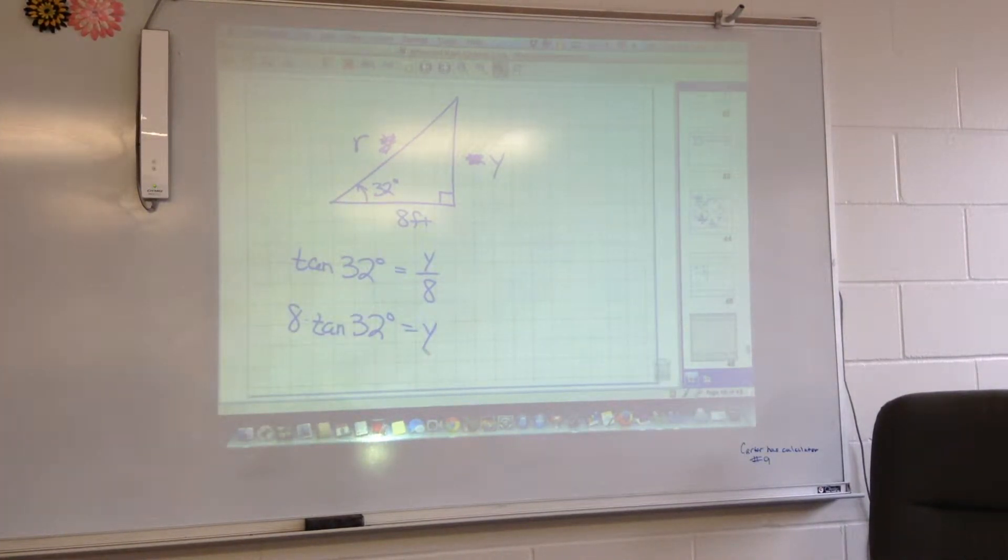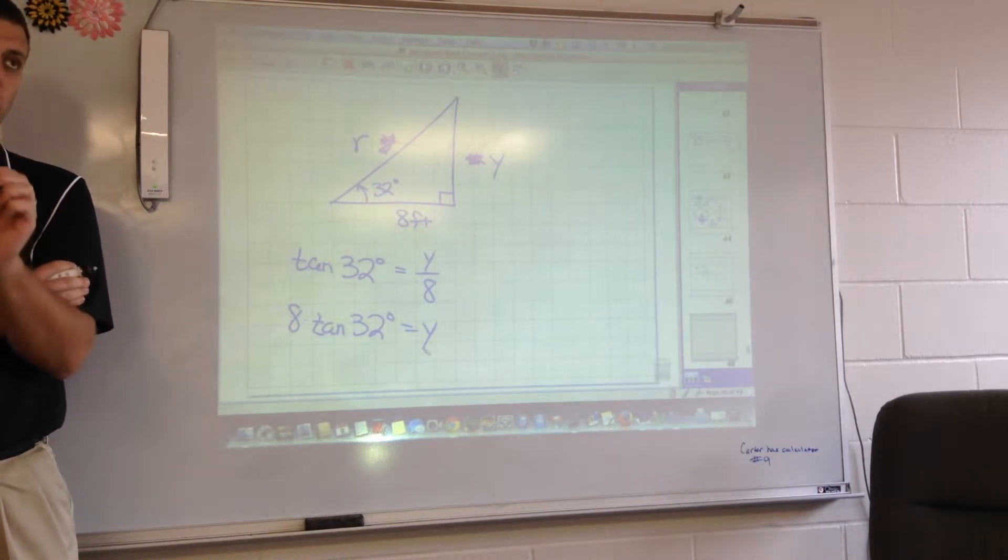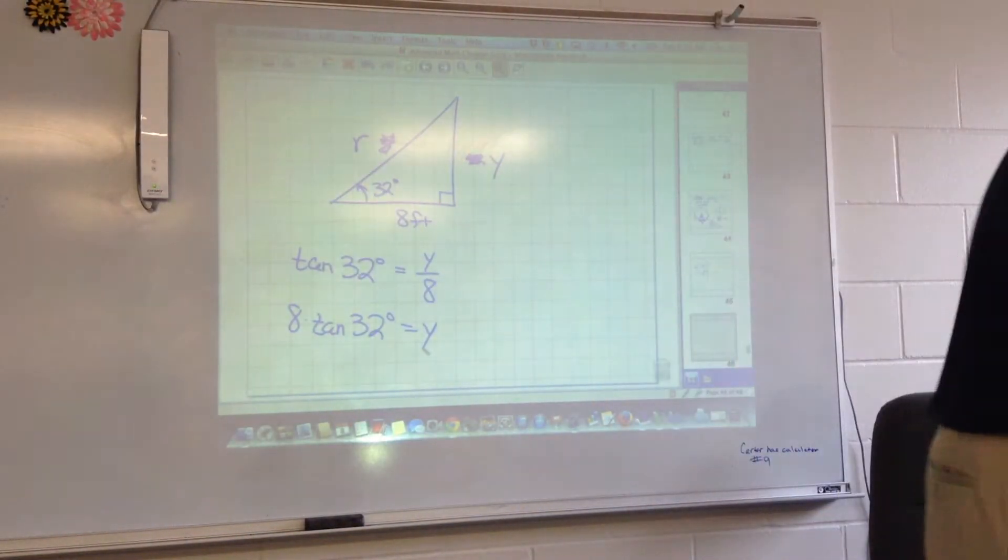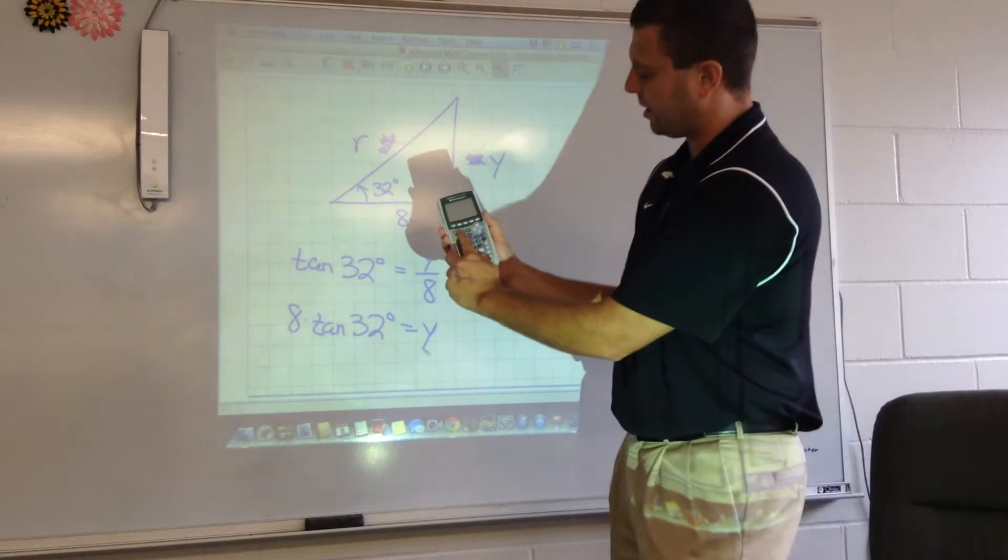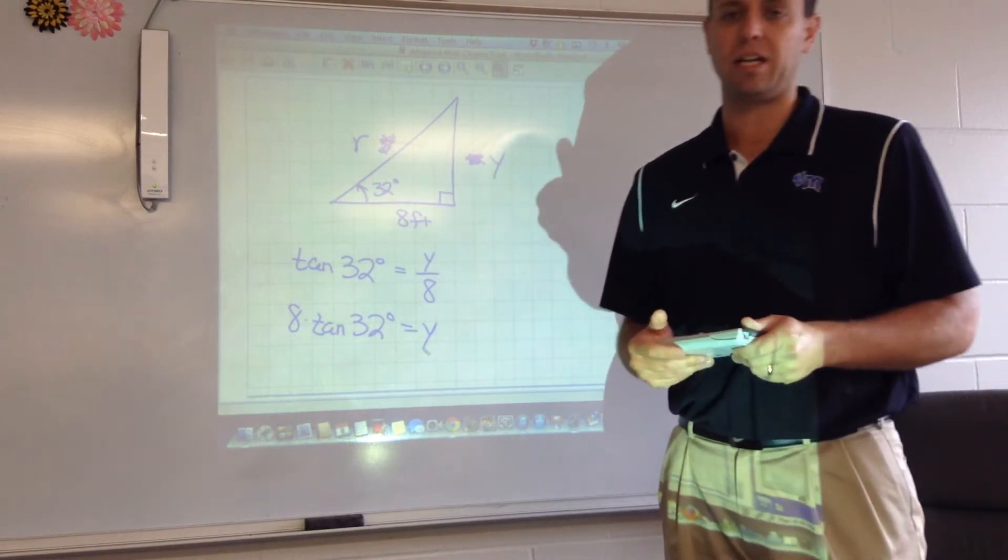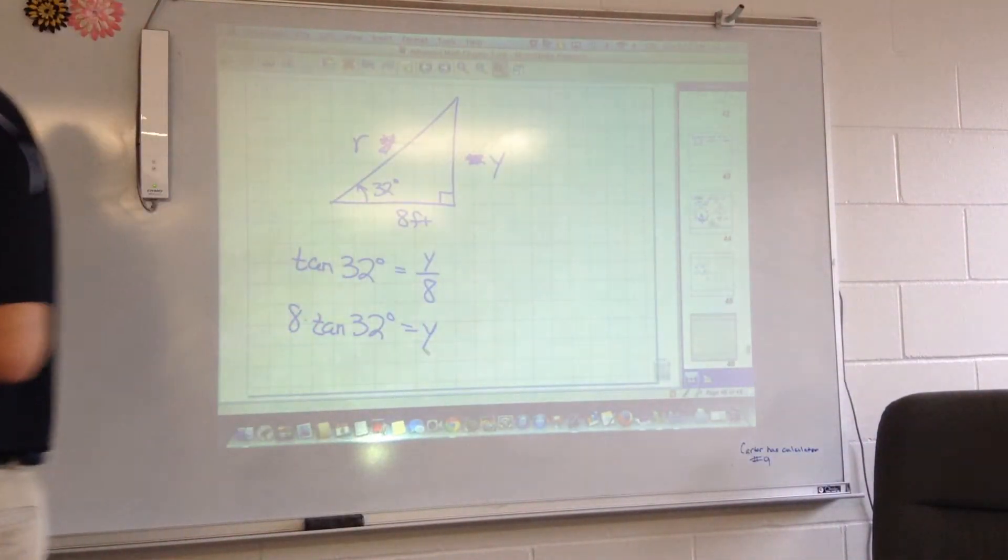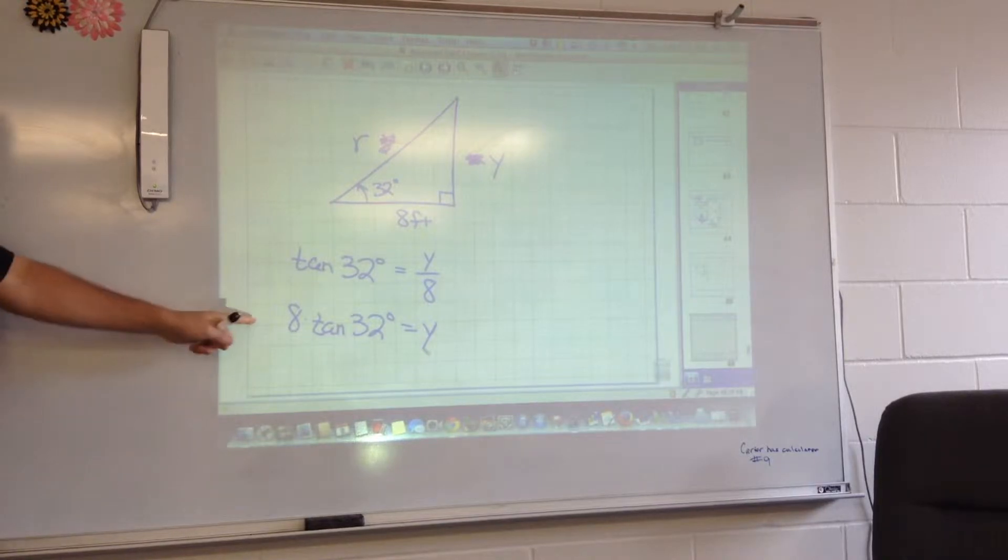Could you solve that equation for Y? Yes. Sure, you could get Y by itself. What would you have to do to both sides? Multiply both sides by 8. So I'm going to write it as 8 times the tangent of 32 degrees equals Y. Then you'd want to get out your calculator. Make sure your calculator is in degree mode.